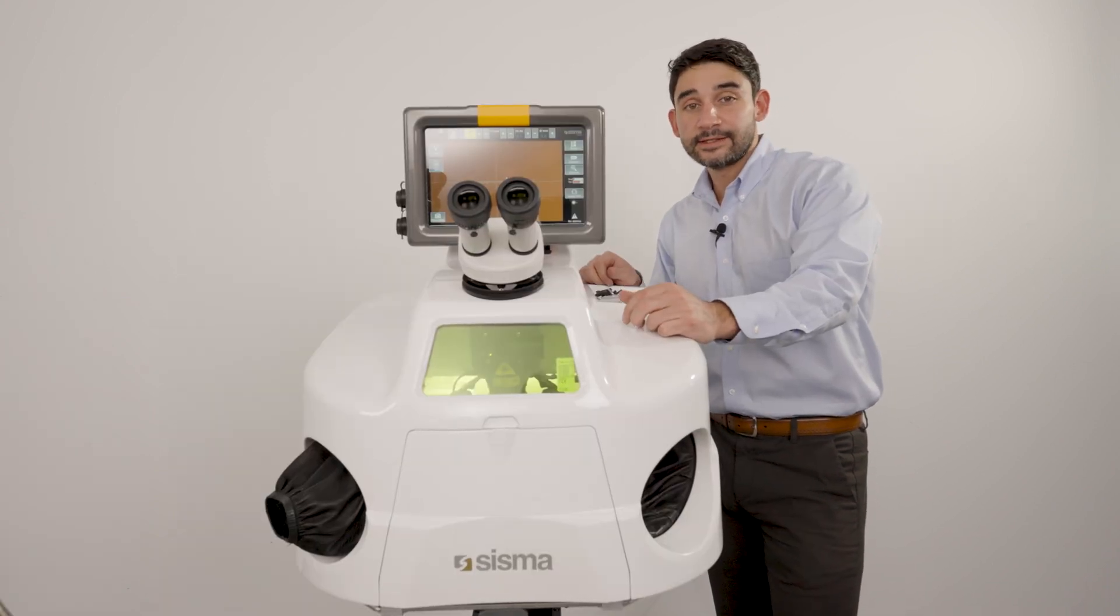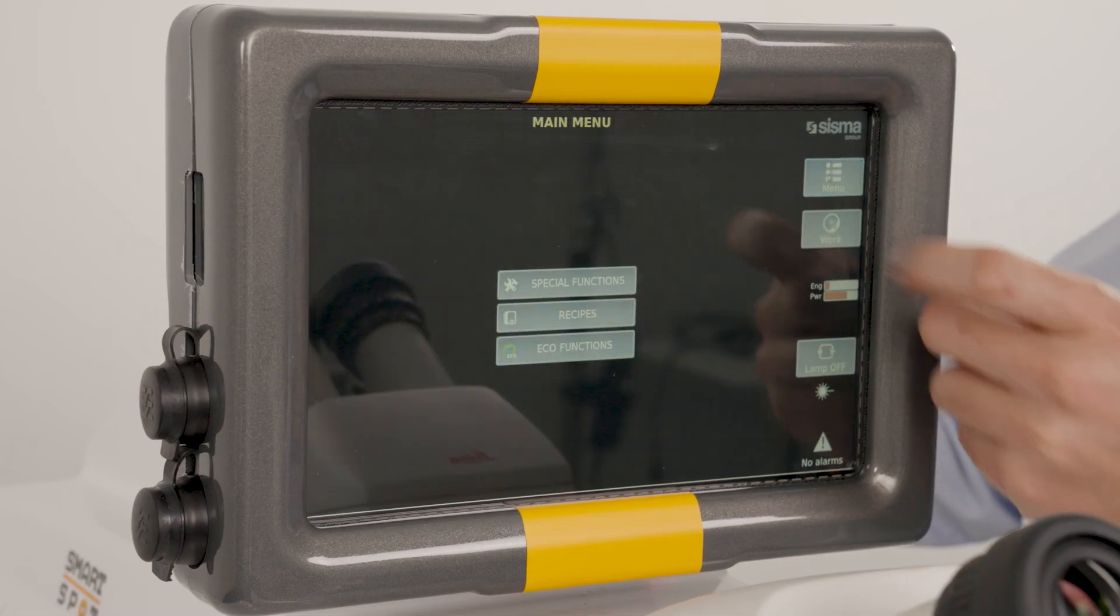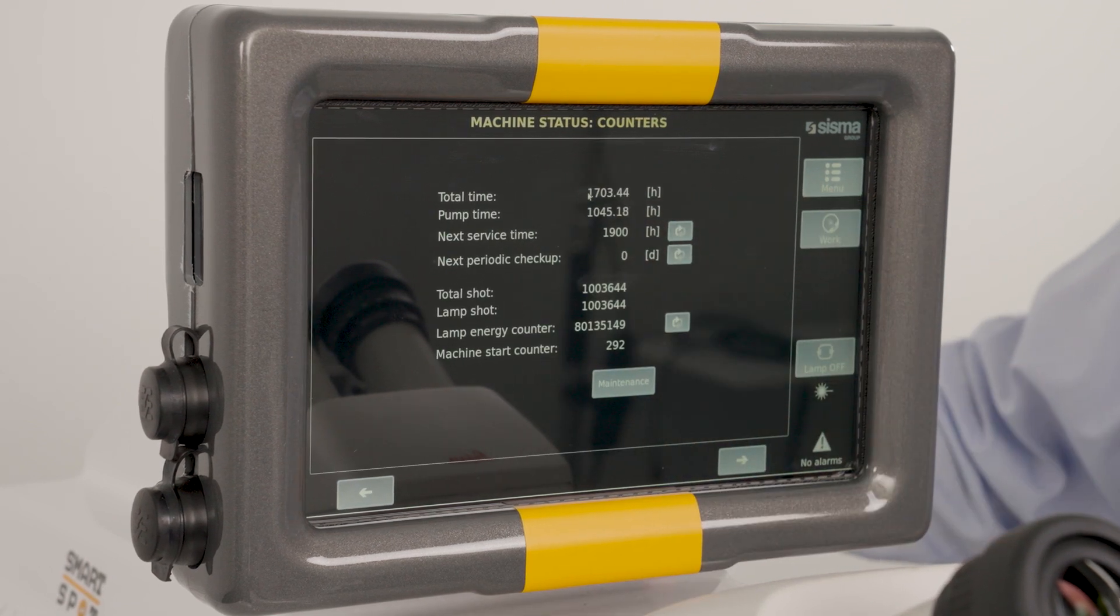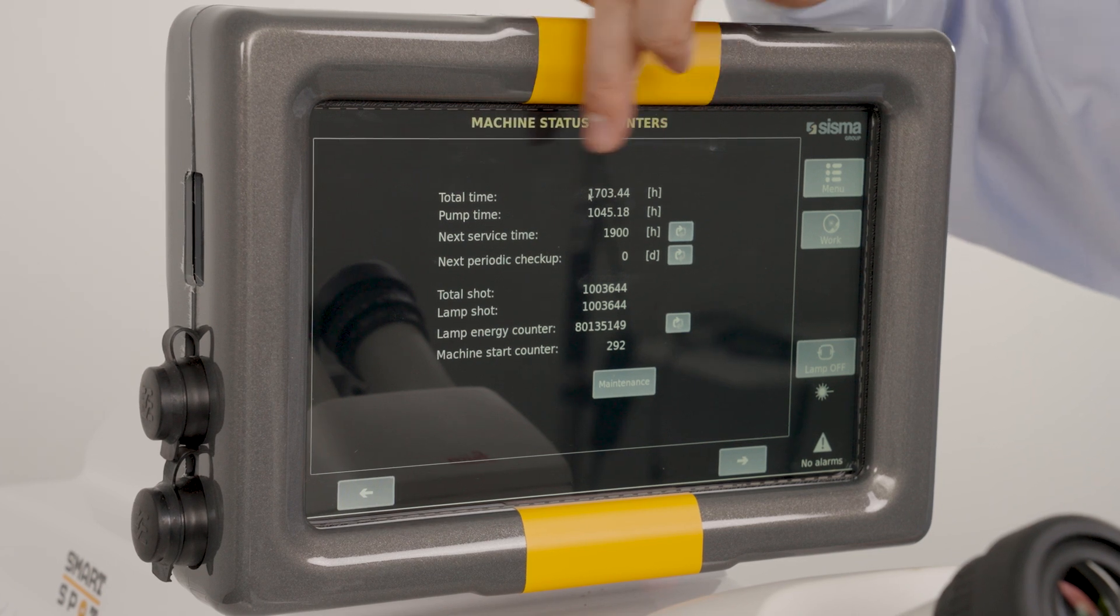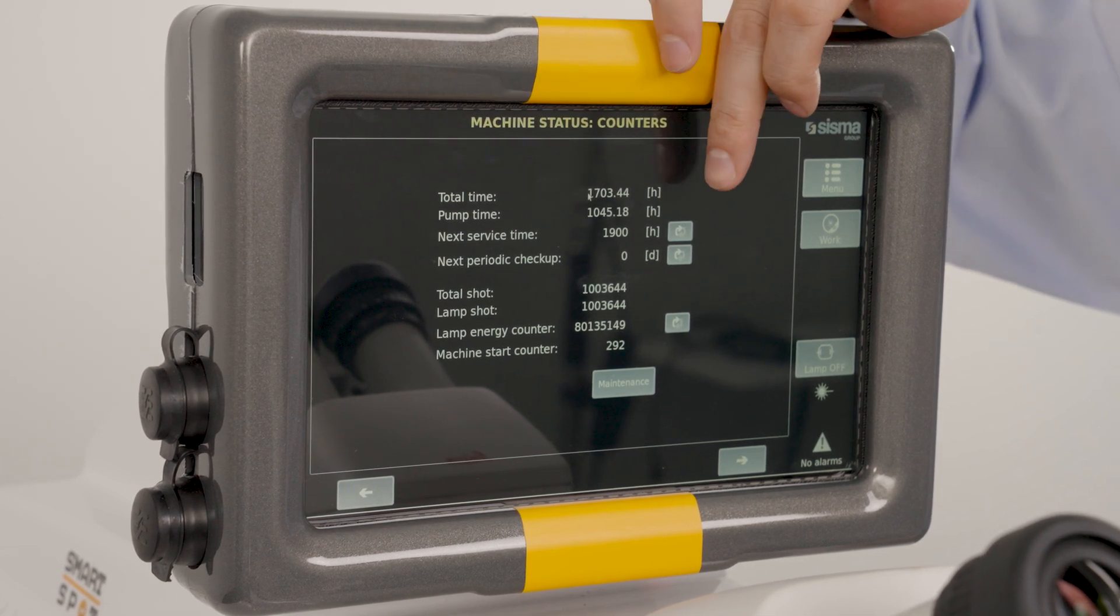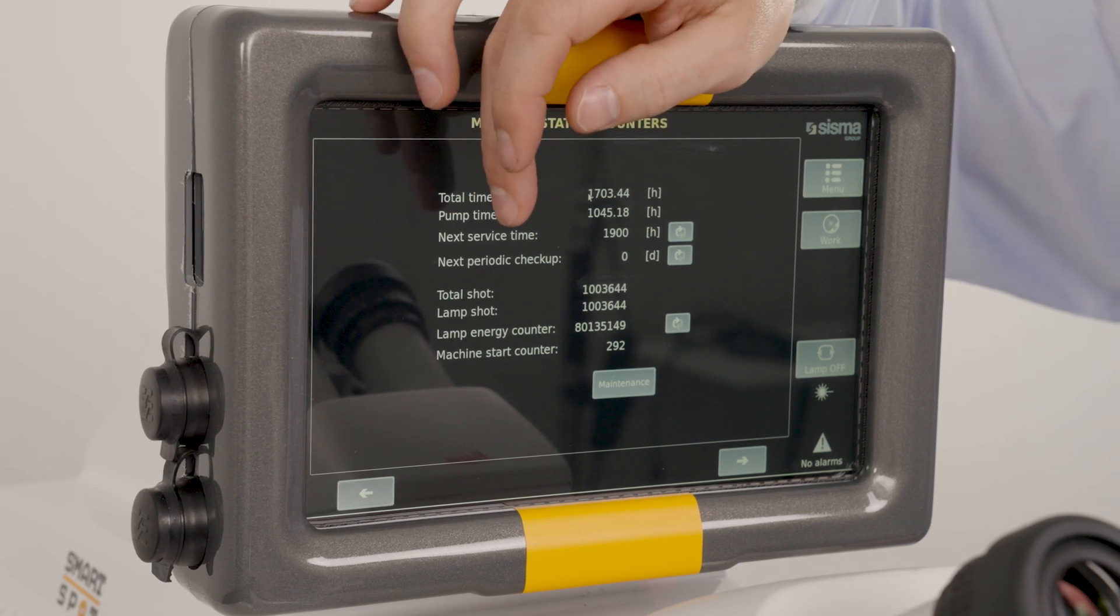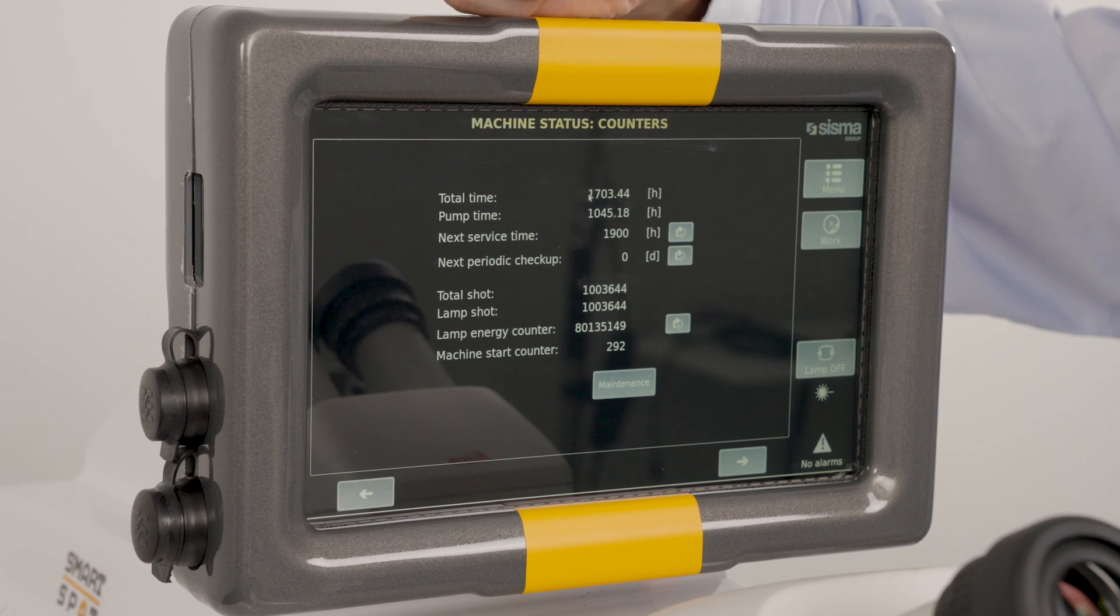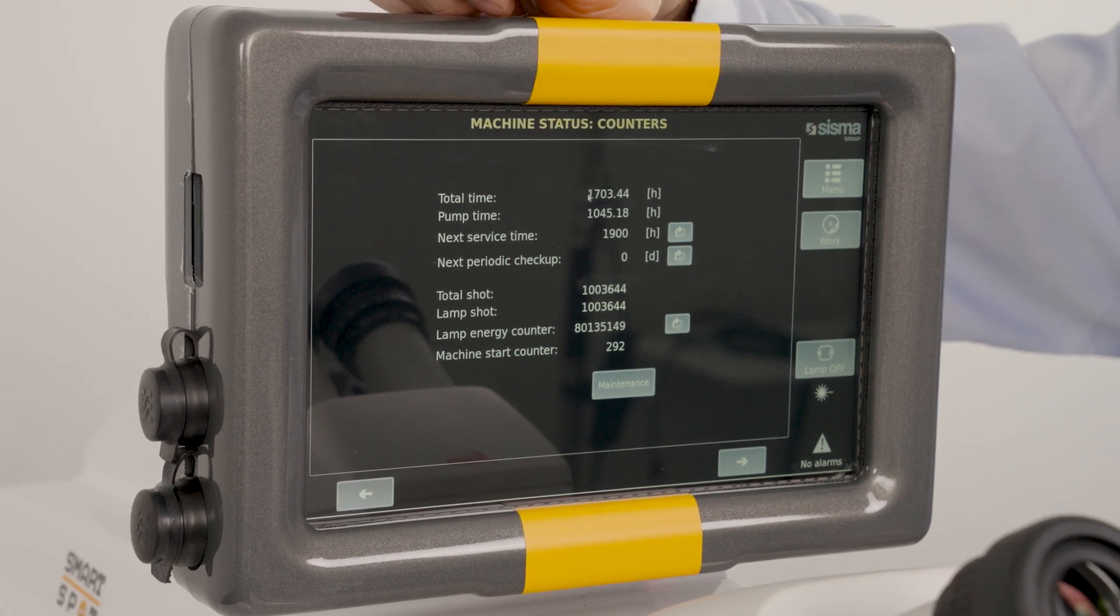All right let's reset the maintenance counter on the software. Let's go into menu, special functions, machine status. See here it gives us the total time on the machine, the pump time, and the next service time. Typically you'll see your pump time close to your next service time and it'll prompt for water maintenance. However you also want to do water maintenance at least once a year even if you don't get close to this service time.